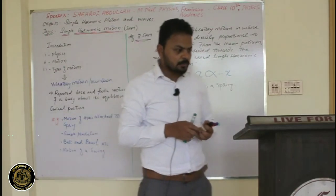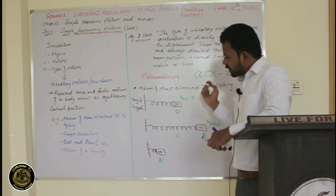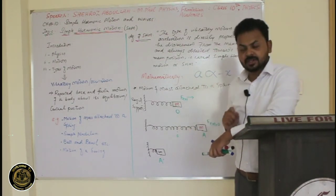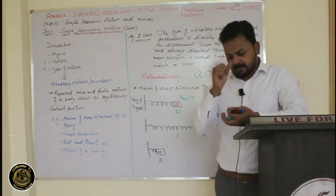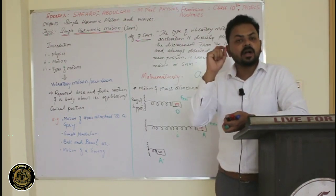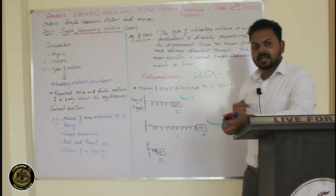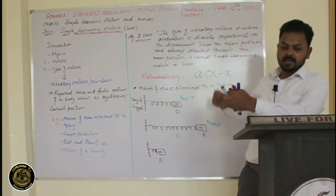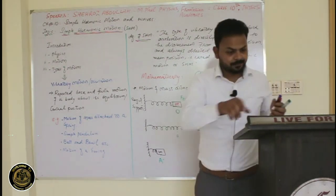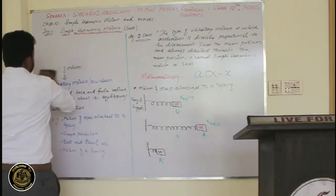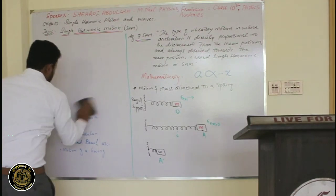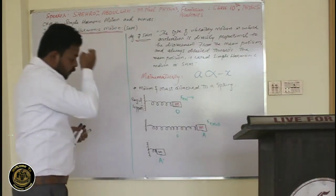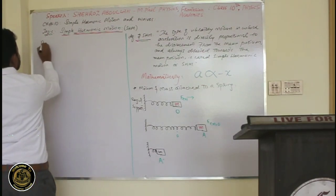Now some basic questions arise: why does the body not stop at O? And who compelled the body to come back to its original position — what was the agent that brought it back? To answer these questions we proceed further. The first thing we need to understand is restoring force.